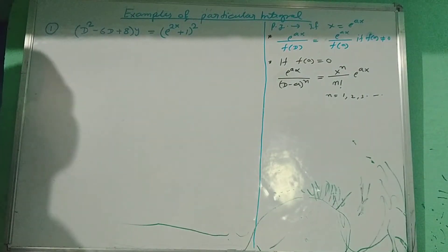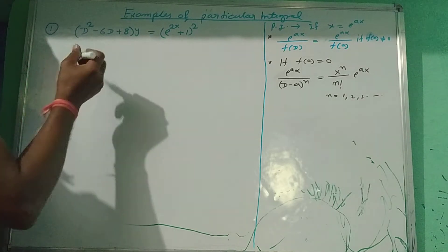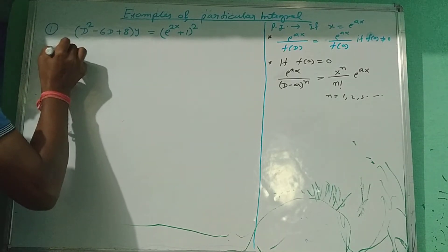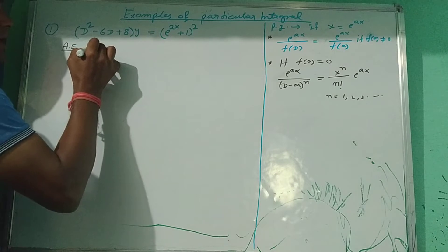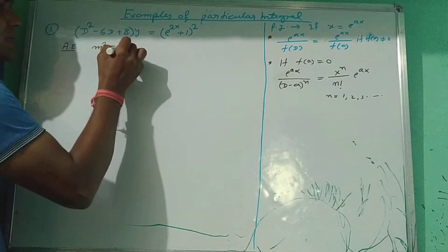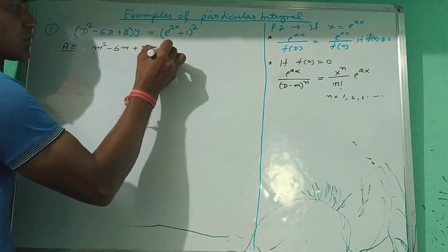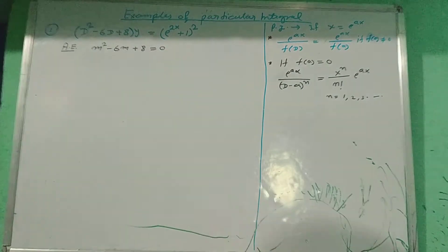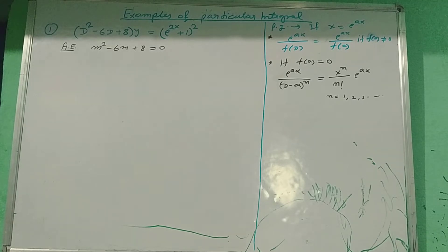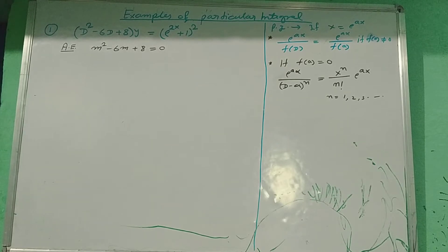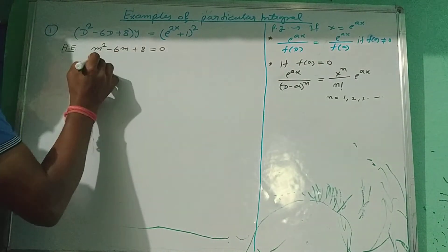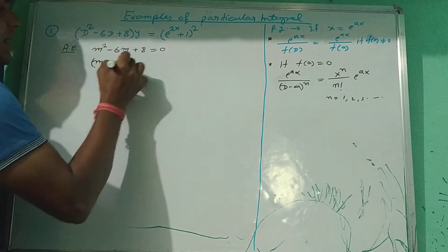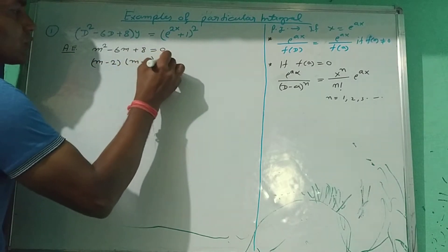Basically, for solving this question, first we need an auxiliary equation. The auxiliary equation of this question is m squared minus 6m plus 8 equal to 0. The factor of this part is m minus 2 and m minus 4, equal to 0.